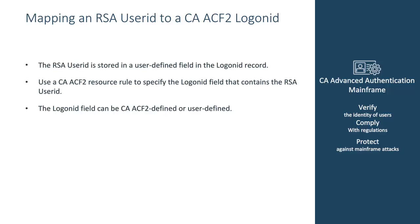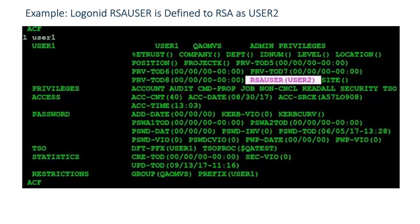To map an RSA user ID to a CA ACF2 login ID, use a CA ACF2 resource rule to specify the login ID field that contains the RSA user ID. In this example, login ID RSA user is defined to RSA as user2.